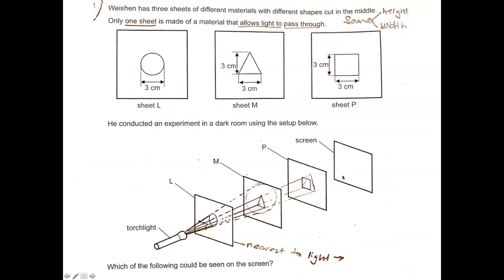Now let's take a look at this. Weishan has three sheets of different materials with different shapes cut in the middle. Only one sheet is made of a material that allows light to pass through. So when I examine all this, you will notice that this is three centimeters. This is three and three. This is three and three. Of course, you can tell that the height here is also three. It is a circle. So that means that the dimension in terms of height and width is the same for all these three materials.